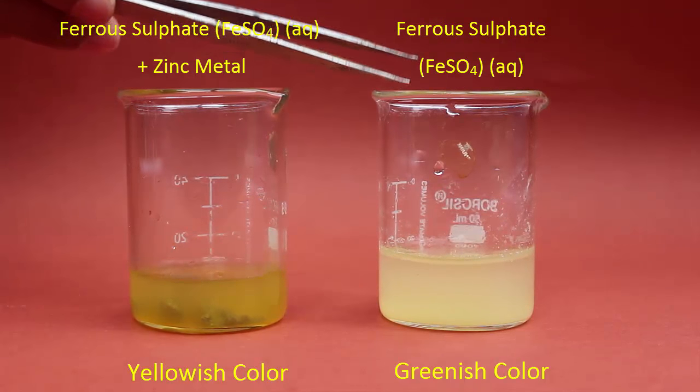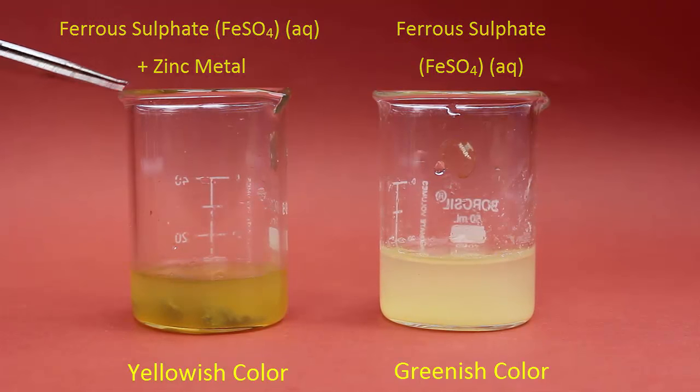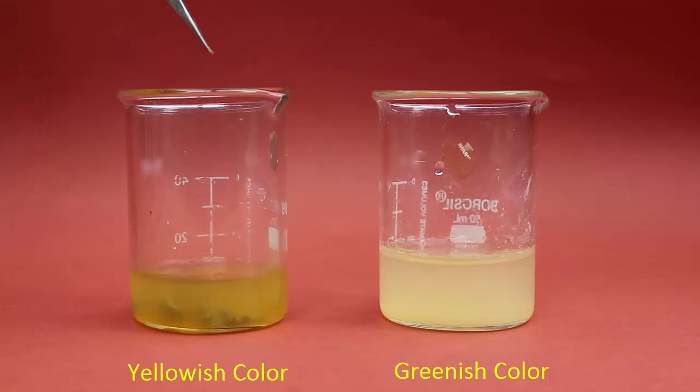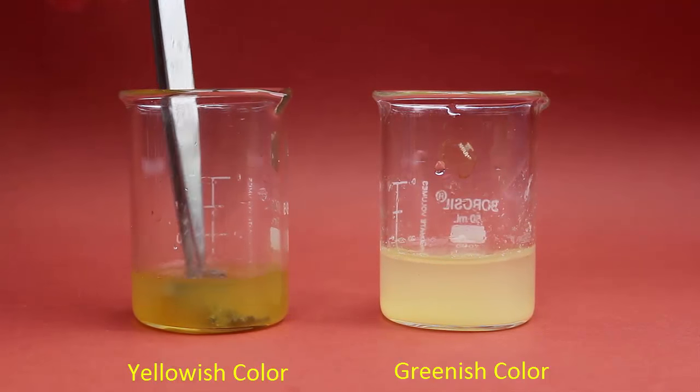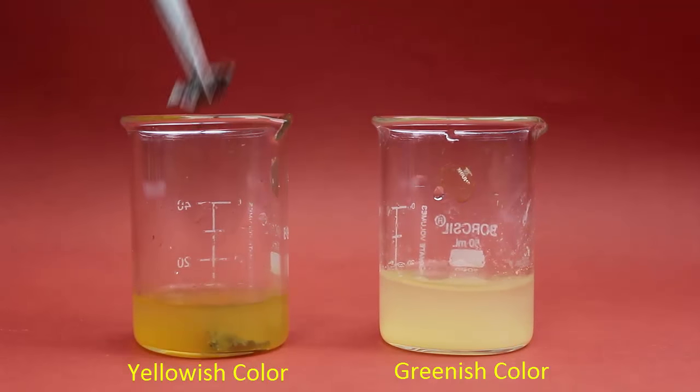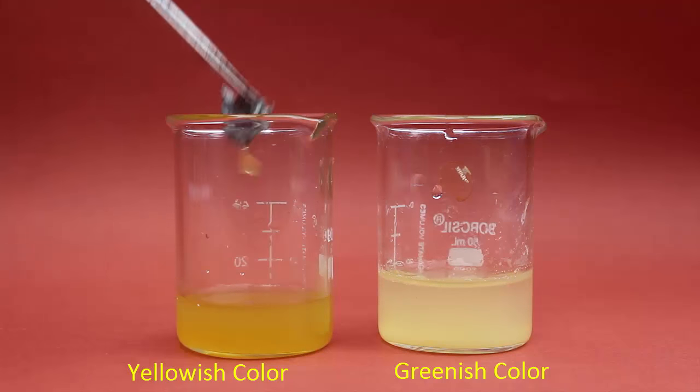This is a freshly prepared ferrous sulphate solution which is faint green in color. Now this was the reaction mixture where ferrous sulphate is reacted with zinc. Now if I lift up the piece of zinc and kept outside.